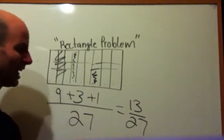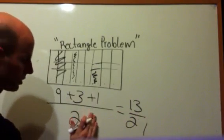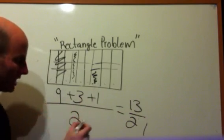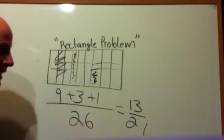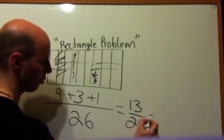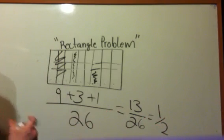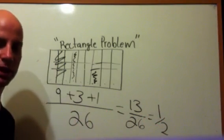Well, approximately, if I just were to change this 27, if I were to just change it just a little bit to 26, then it would be 13 out of 26, or one-half. Now, what gave me the right to turn it into 26?